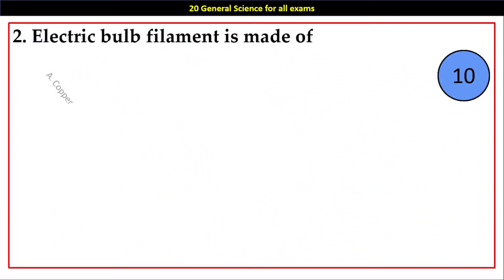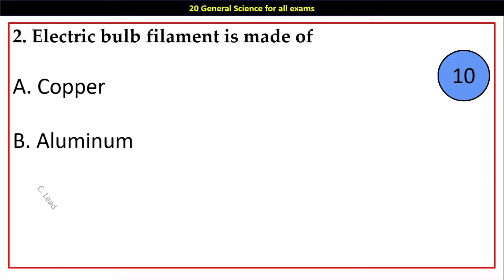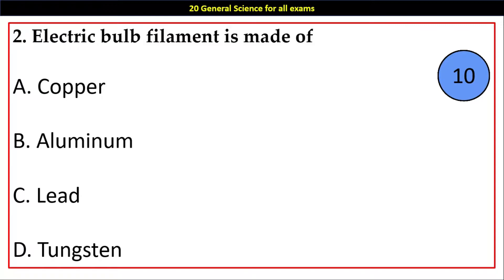Question number 2. Electric bulb filament is made of: Options A. Copper, B. Aluminium, C. Lead, D. Tungsten. Answer: D. Tungsten.